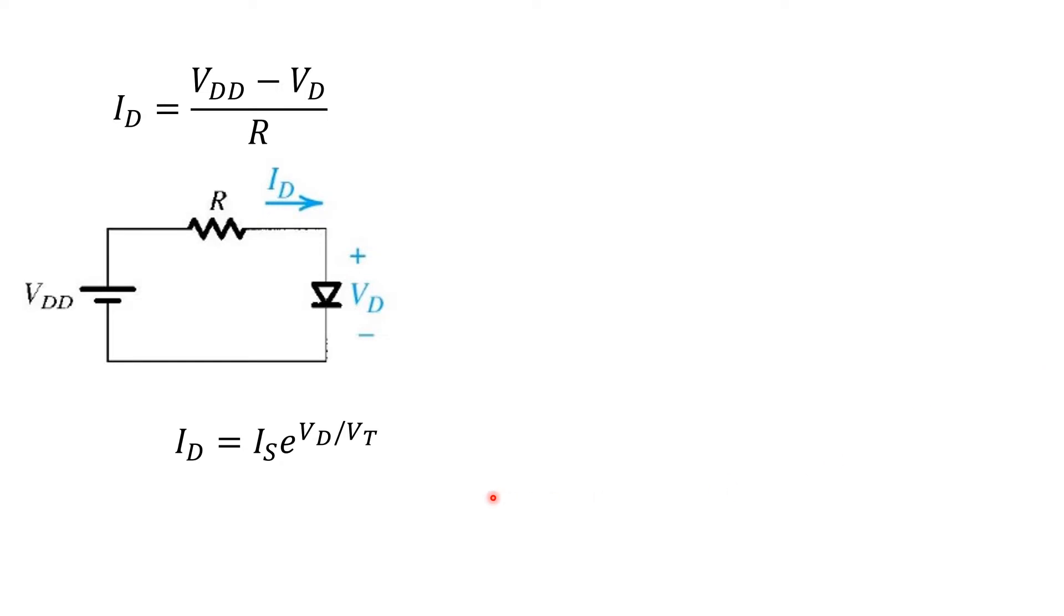The second relationship is the IV characteristic of the diode shown here. We've neglected the term minus one because in fact we should be able to see here that with any reasonably large value of V_DD, the diode will certainly be forward biased, so we're justified in using this approximation. So to find the values of I_D and V_D, we have to solve these two equations simultaneously. This would be straightforward except the diode's equation is non-linear.